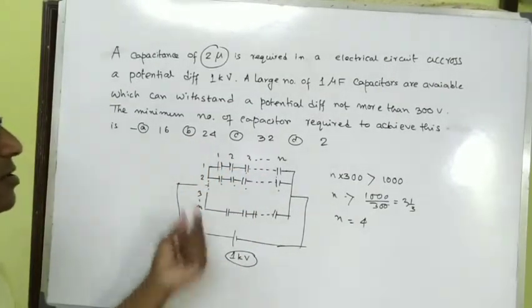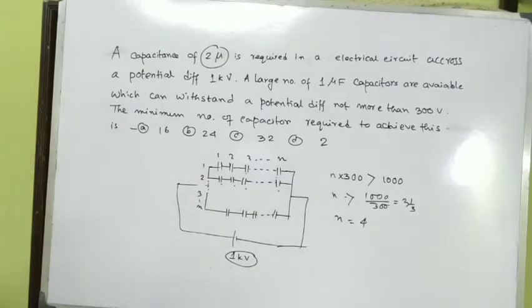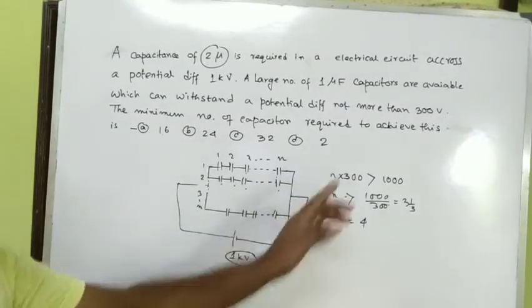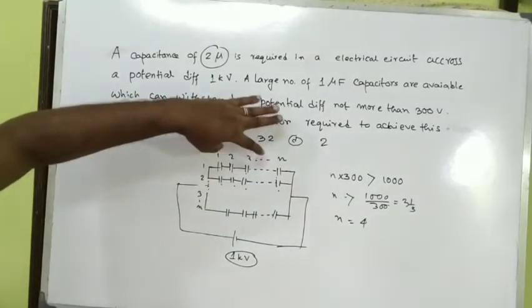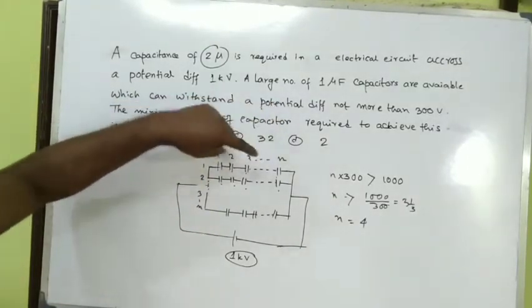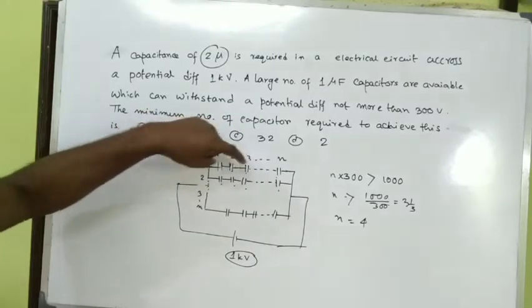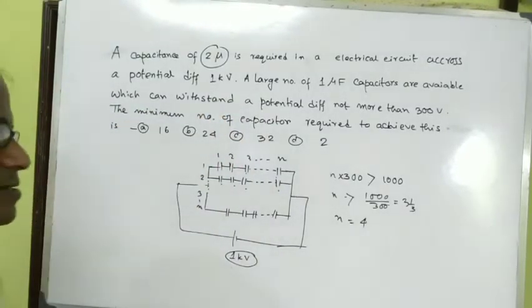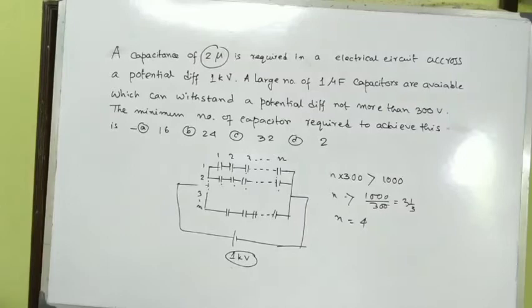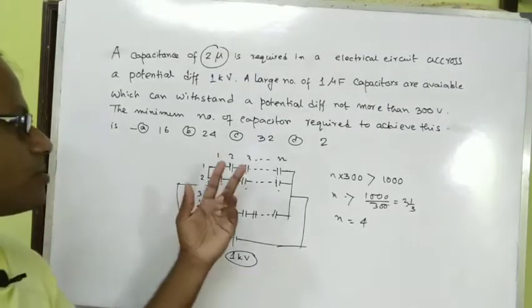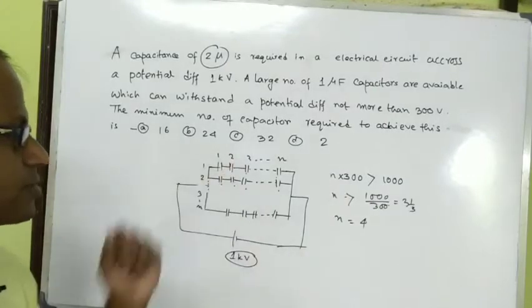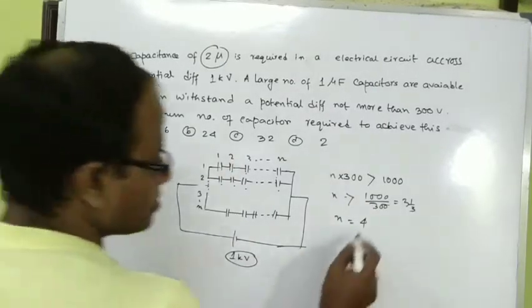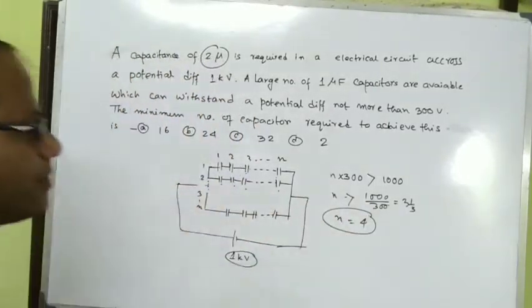With n equals 4, we get 4 times 300 equals 1200 volts, which is greater than 1000 volts. So 4 capacitors in series can safely handle 1000 volts. Therefore n equals 4.